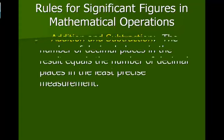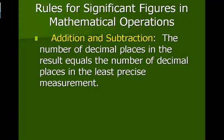Now, what happens with addition and subtraction? The number of decimal places in the result equals the number of decimal places in the least precise measurement. Notice that with addition and subtraction, it's decimal place dependent.